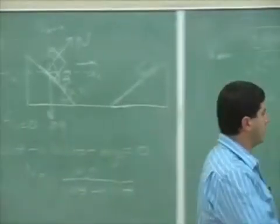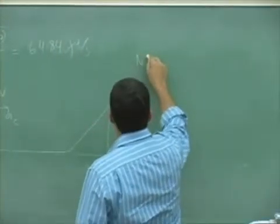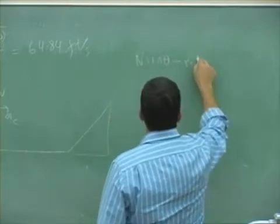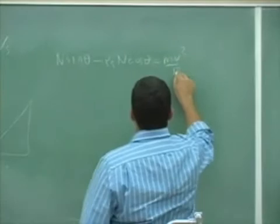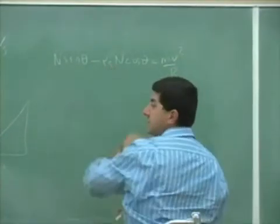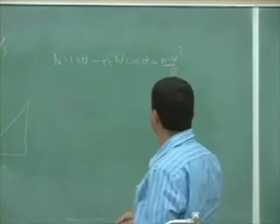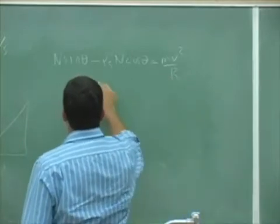The role of the friction force exchanges, reverses. This becomes plus, this minus. So it ends up being n sin θ, and then minus μ_s n cos θ equals mv²/r. You see, the friction force is fighting the normal force in the direction of the acceleration.